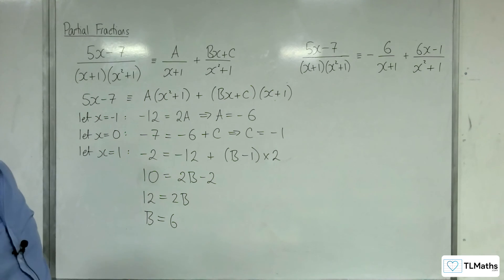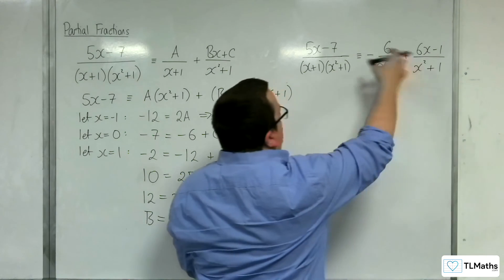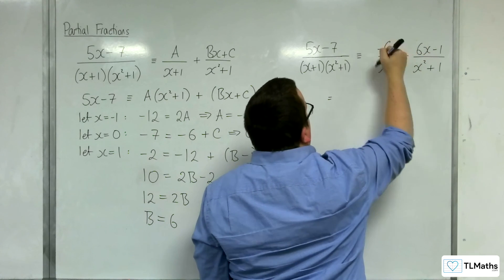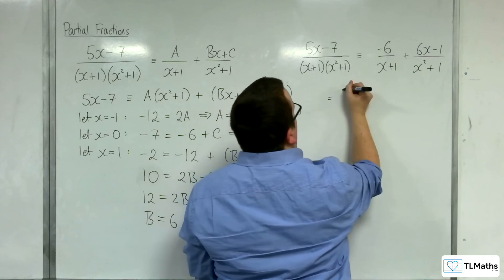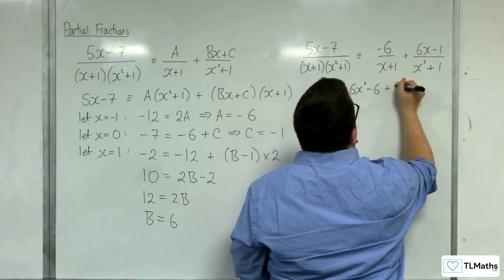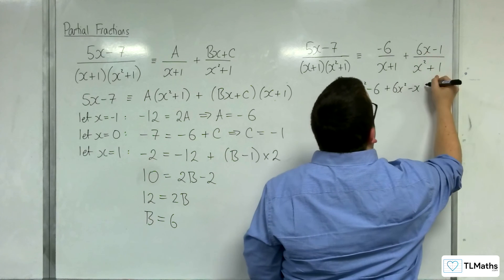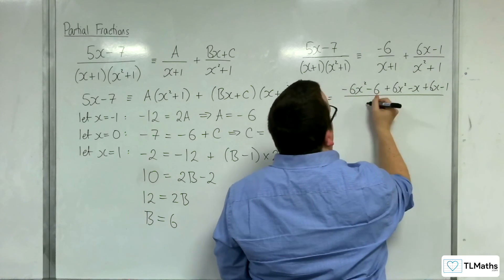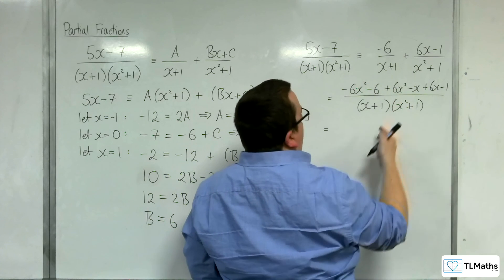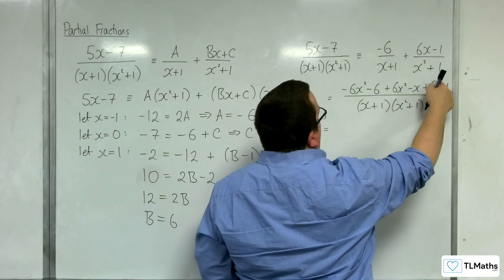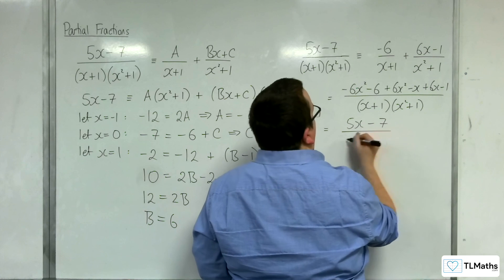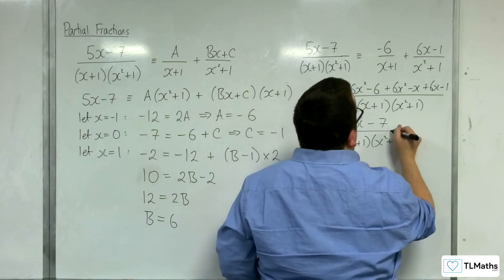Now if you need convincing that that has worked, I could do some cross-multiplication here. Minus 6 times x squared plus 1 is minus 6x squared minus 6, and I've got x plus 1 times 6x minus 1. So plus 6x squared take away x plus 6x take away 1, all over x plus 1, x squared plus 1. So the 6x squared cancel. I've got 6x take away x is 5x, and I've got minus 6 take away 1, which is minus 7, over x plus 1, x squared plus 1. And so it's worked.